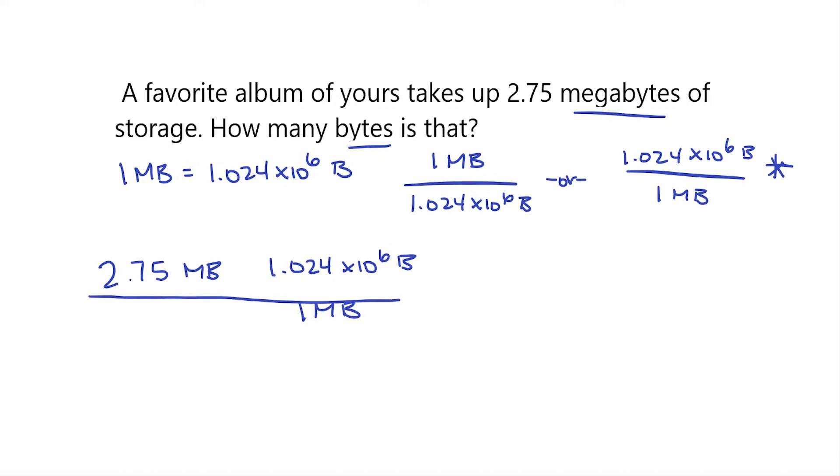So now let's go ahead and solve by multiplying our numerators and then dividing by our denominator. So 2.75 times 1.024 times 10 to the 6 is equal to 2.81 times 10 to the 6.